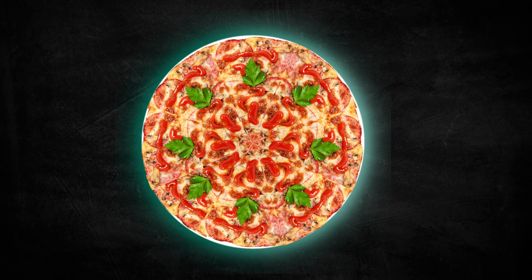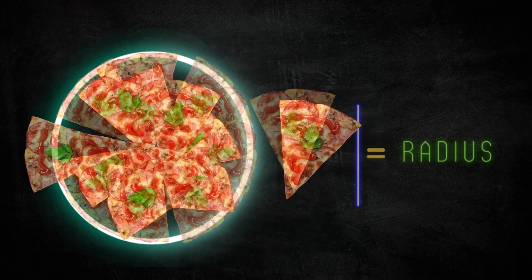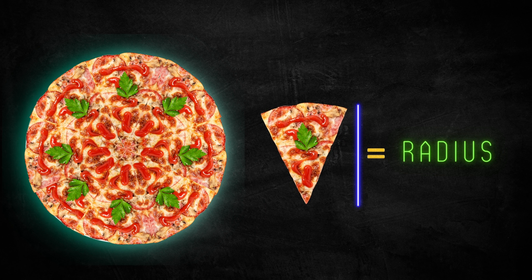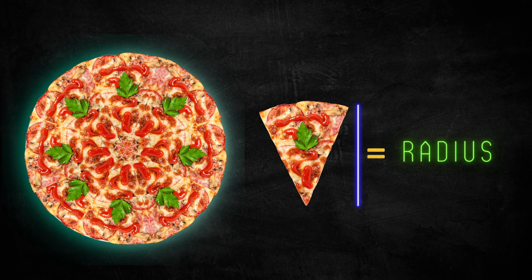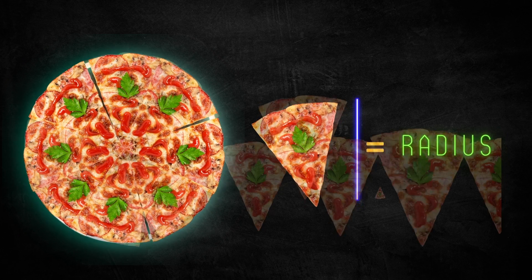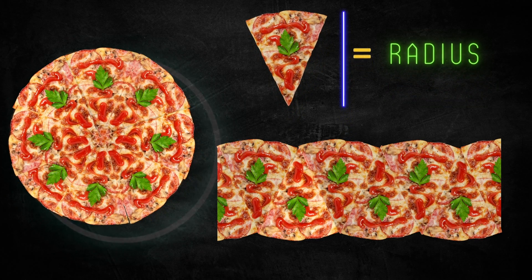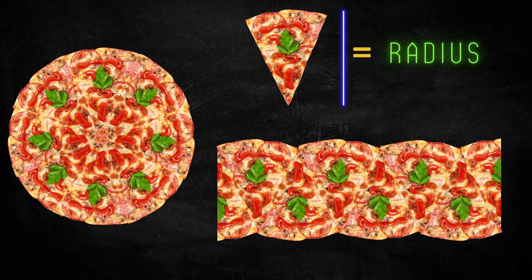First, we assume one circular shape, just like a pizza. Then cut from the center point to the border, so that length is equal to the radius. The same way, cut the entire pizza and rearrange in a zigzag manner — we get a figure that looks like this.